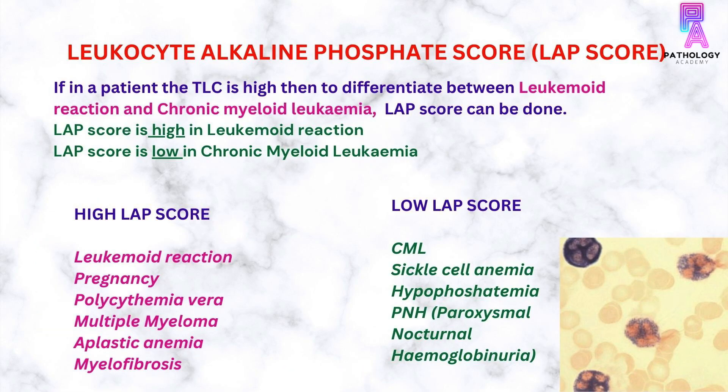If in a patient the total leukocyte count is high, then to differentiate between leukemoid reaction and chronic myeloid leukemia, LAP score can be used. The LAP score is high in leukemoid reaction and low in chronic myeloid leukemia. Other causes of high LAP score include pregnancy, polycythemia vera, multiple myeloma, aplastic anemia, and myelofibrosis.